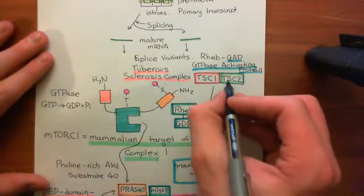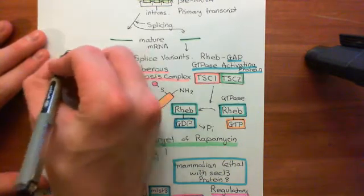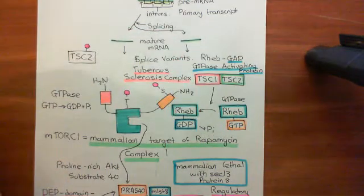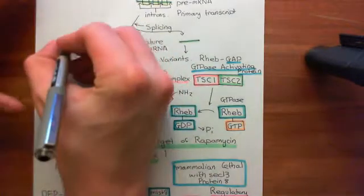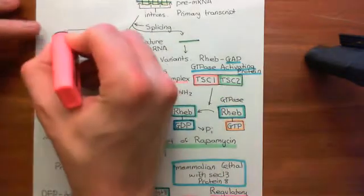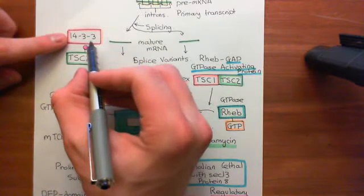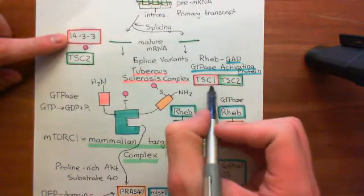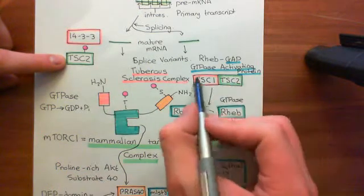Protein kinase B is going to inactivate the tuberous sclerosis complex by phosphorylating tuberous sclerosis complex protein 2. When it does this, it causes TSC2 to associate with a protein we've actually met before — the 14-3-3 protein, which was previously associated with inactive RAF kinase enzymes. This interaction with 14-3-3 then stops TSC2 from being able to bind to TSC1 and form the tuberous sclerosis complex.